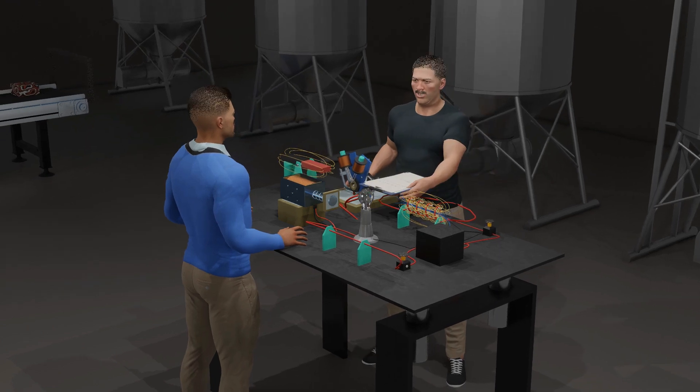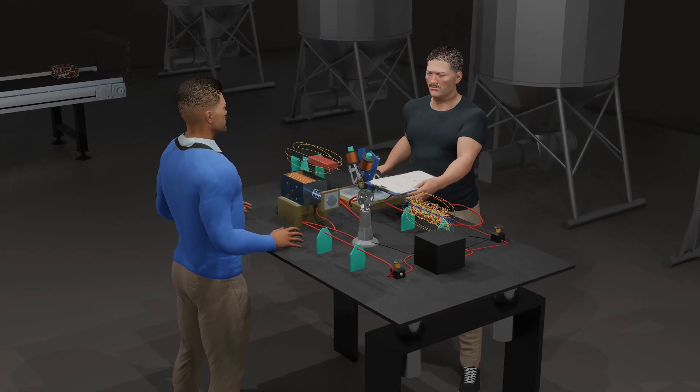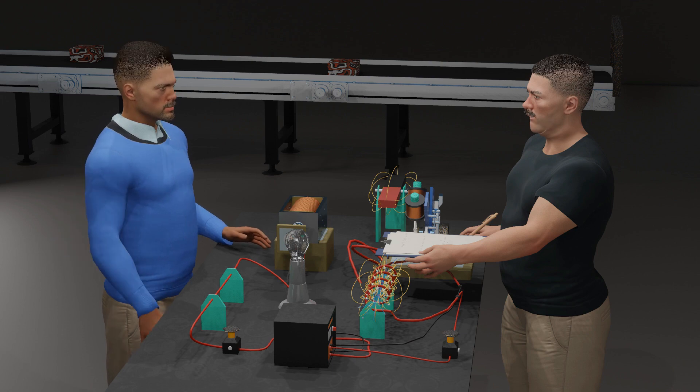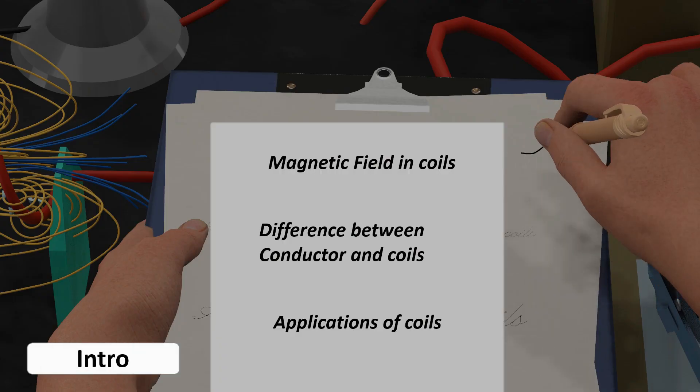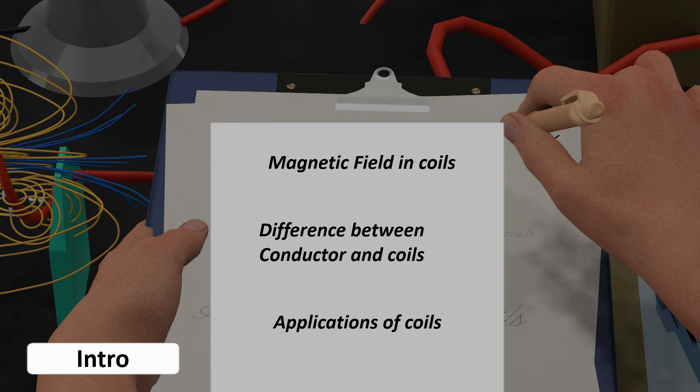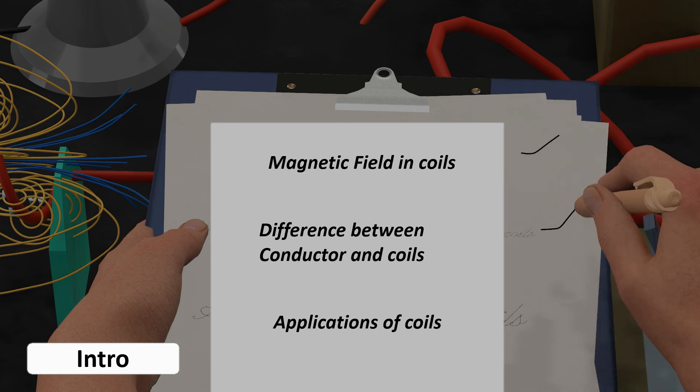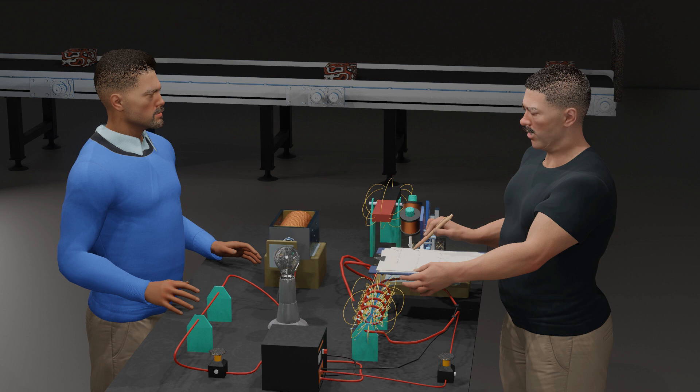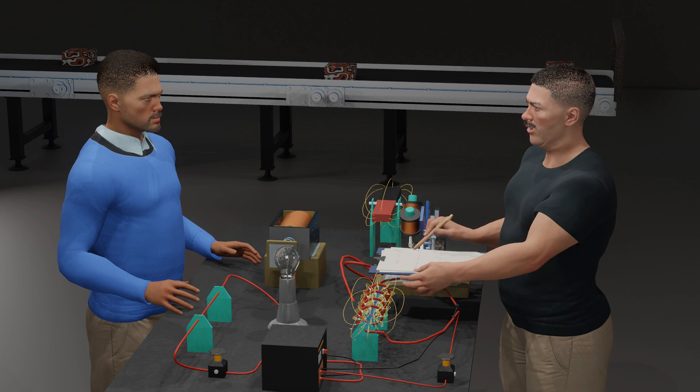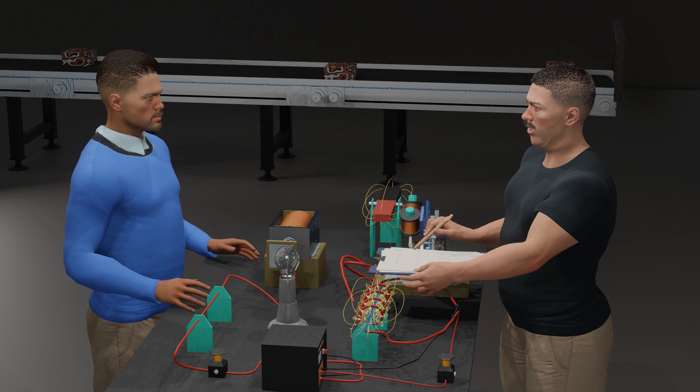Welcome to another informative video brought to you by ORTRUO. In today's video, we will be looking at how magnetic fields are generated in a solenoid coil. The major differences between the two generated fields will be looked at and their applications. Without any further ado, let's get started.